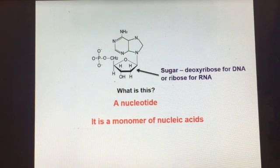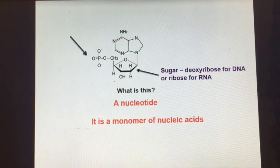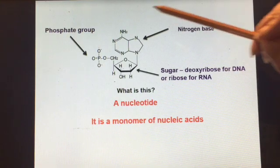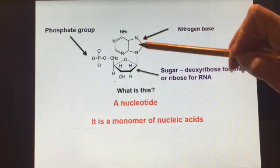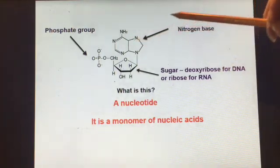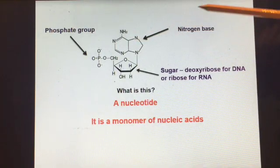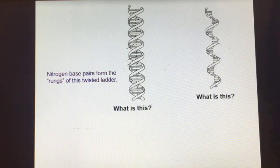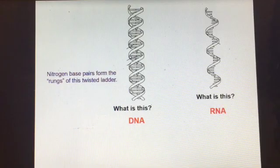The sugar would be deoxyribose for DNA, or ribose if you have RNA. That is our phosphate group, and that is our nitrogen base, which comes in five different shapes: adenine, thymine, guanine, cytosine, and uracil. The molecule on the left is DNA. The molecule on the right is RNA.